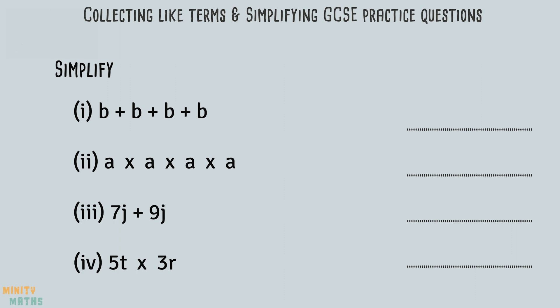Question one asks us to simplify the expression b plus b plus b plus b. Here we have four lots of b's which can also be written as 4b. This is now in its simplest form.